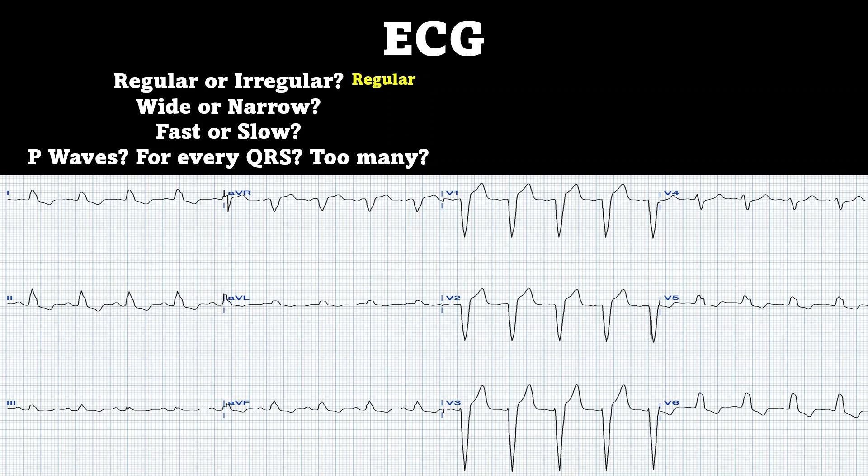So this is going to be a regular rhythm. Next, is the QRS wide or narrow? If you look at V1, V2, and V3, you're going to notice that it's looking pretty wide — so that's going to be a wide complex rhythm. Remember that a wide QRS is anything greater than 120 milliseconds.